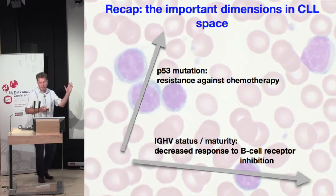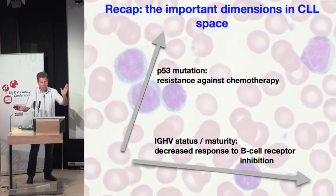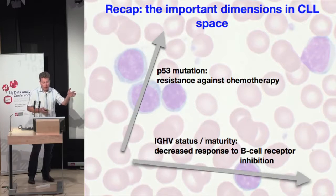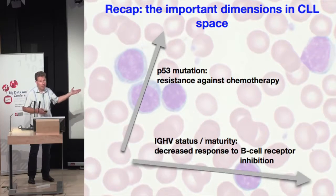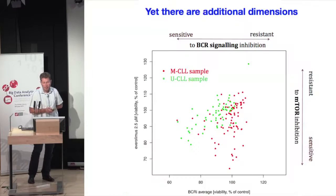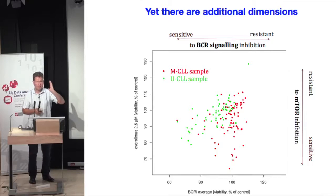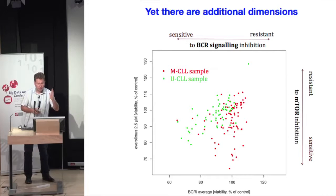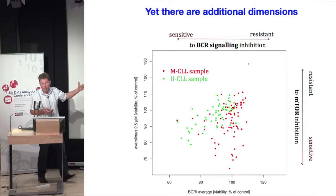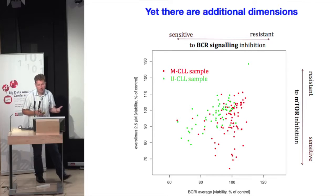Currently, the two main dimensions we think about medically in CLL are the P53 status and the IGHV status — and they also determine drug responses to certain classes of drugs. But in fact there are more dimensions. As one example, we see a very clear mTOR-related signal, which is a different signaling pathway that seems to determine the response to certain drug classes. Here we actually see some kind of mutual exclusivity: some tumors seem to depend more on BCR signaling, and some tumors seem to depend on mTOR signaling. That, of course, directly has implications for how we would treat them.